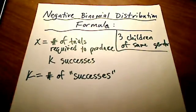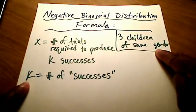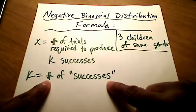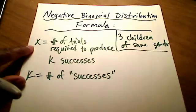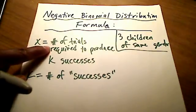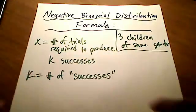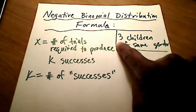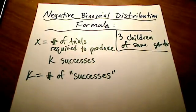In our case, k is going to be three, because when we have three children that are of the same gender, then we have success. So we're looking for k successes, and k equals three. It might take exactly three children to reach three successes, or it might take four children, or even five children to reach three that are of the exact same gender. So x represents the number of trials, and k is the number of successes.